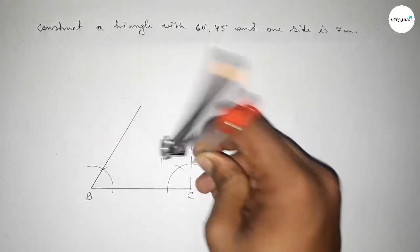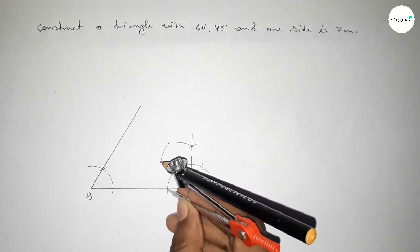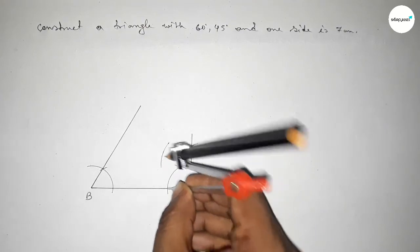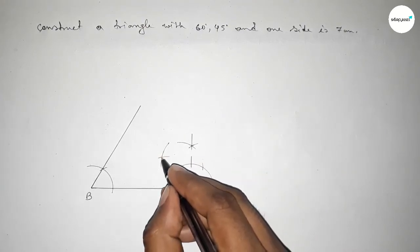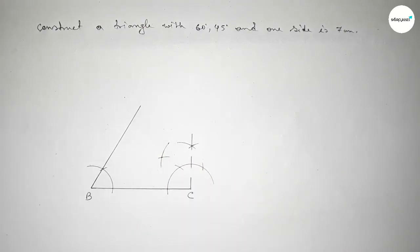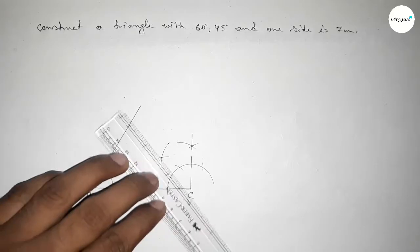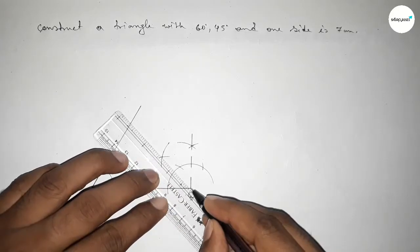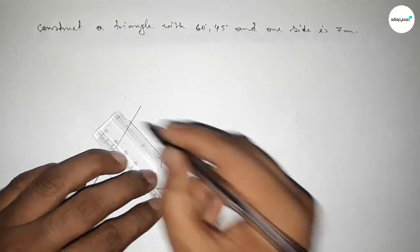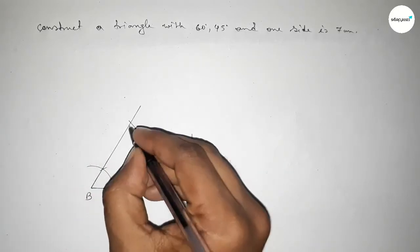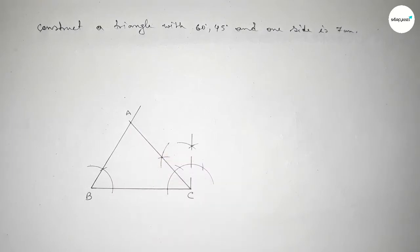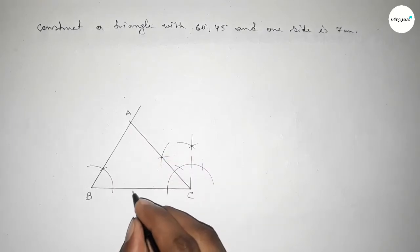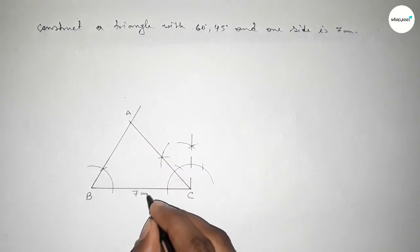Now bisecting this 90 degree angle to get 45 degrees. Putting the compass here and taking any length, drawing an arc and cutting here so both lines intersect at a point. Joining this to get the 45 degree angle, and both lines intersect at point A.